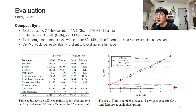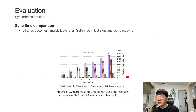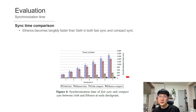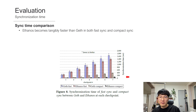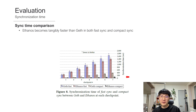594MB would be reasonable for a client to bootstrap as a full node. We also measured synchronization time and found that Ethanos is tangibly faster than Geth in both fast sync and compact sync. Although storage size for fast sync is similar between Geth and Ethanos, the sync time of Ethanos is much better. For compact sync, Ethanos shows improved synchronization time, and the bootstrapping time for Ethanos compact sync is almost constant over time. We can therefore expect that Ethanos compact sync can limit both storage size and synchronization time, enabling people to easily bootstrap as a full node.